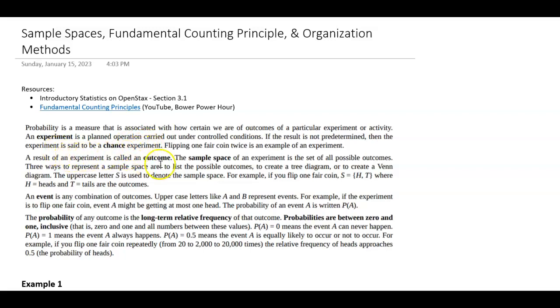The result of an experiment is called an outcome and the sample space is all of the possible outcomes. We can list them, we can create a tree diagram, we can also do a Venn diagram. A lot of times we use S to denote the sample space. So if you flip one coin, you could either get heads or tails. So that would be our sample space. An event is any combination of outcomes. Usually we use uppercase letters like capital A or capital B for those. And so you'll see like the probability of event A, we write it as the probability of A.